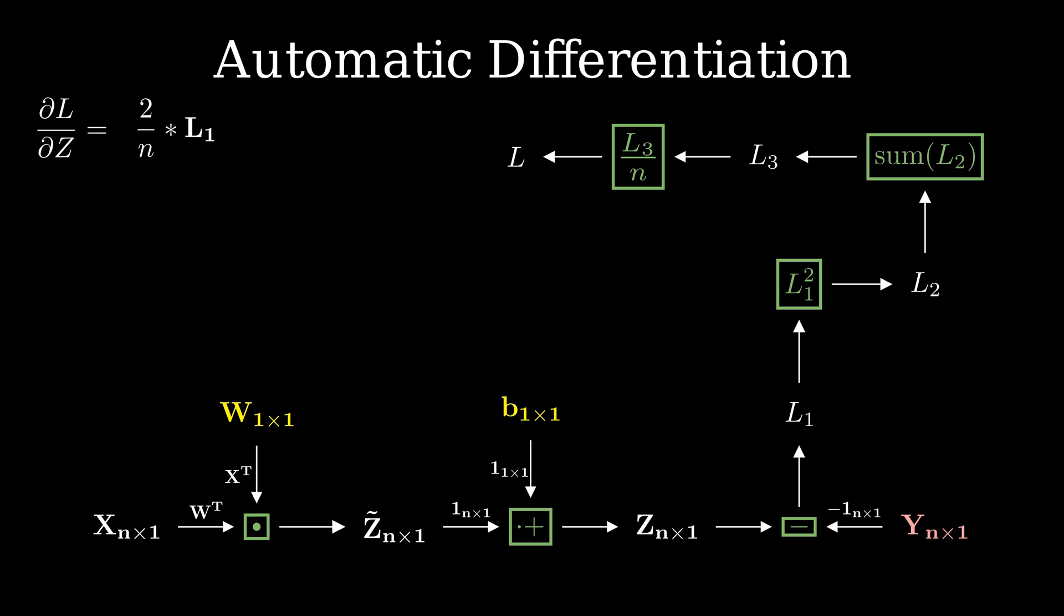Now we are at an interesting part where the path divides into 2. Let's first get the derivative of l with respect to b. Using chain rule, we can multiply the global and local gradients. However, you have to remember that the operation here is broadcast addition. Hence, to get the derivative, we have to collapse or in other words, add the elements of the resulting vector.